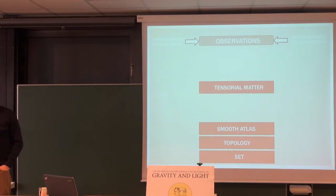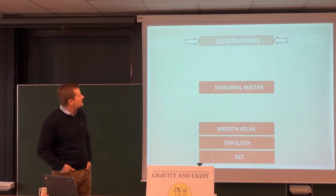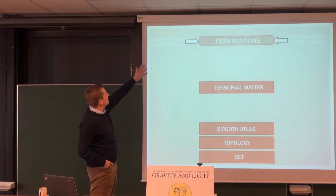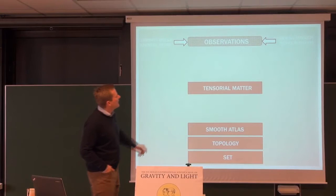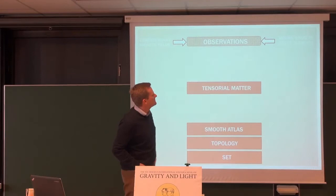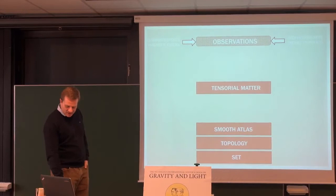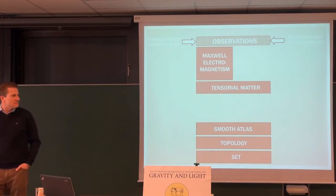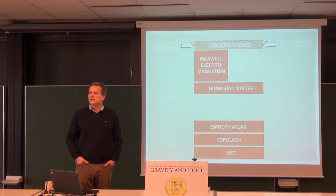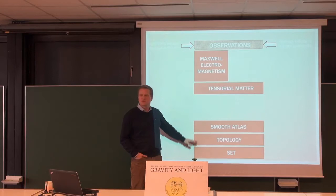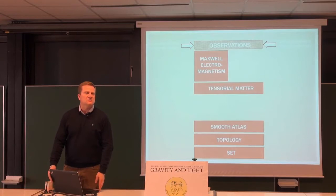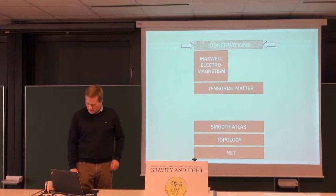Now I would like to jump back to 1850 or 1860 when Maxwell formulated his Maxwell equations. We look at observations: there was the observation that currents induce magnetic fields — that's Ampere — and moving magnets induce currents — that's Faraday's law. Maxwell combined them into the Maxwell equations and added a little term. From a modern point of view, he wrote down his Maxwell theory of electromagnetism. Of course, Maxwell didn't really think of tensors and smooth atlases and topologies, but from a modern perspective, that is what he did.